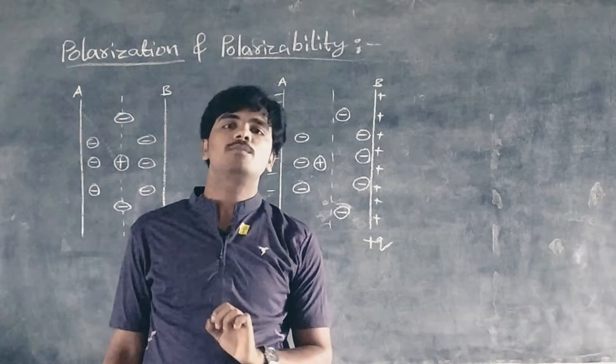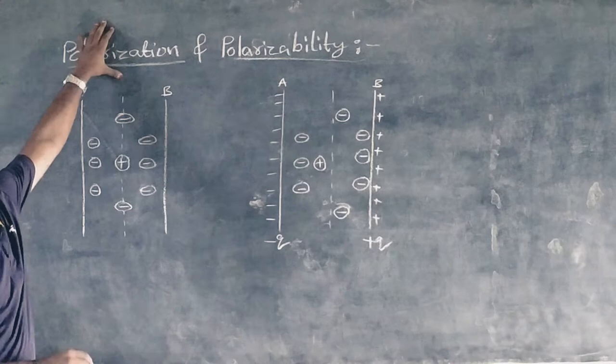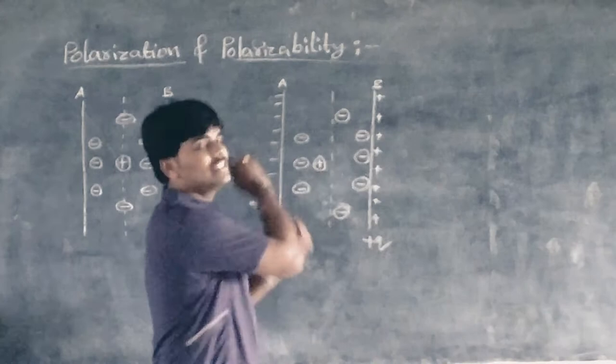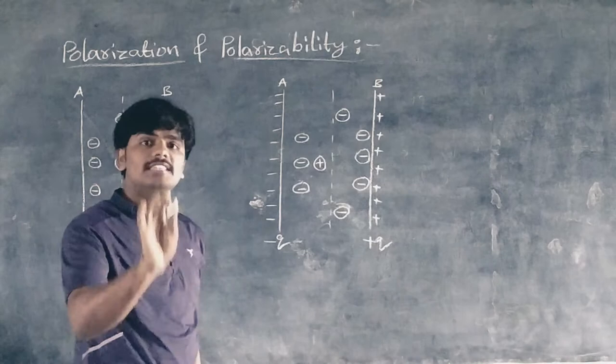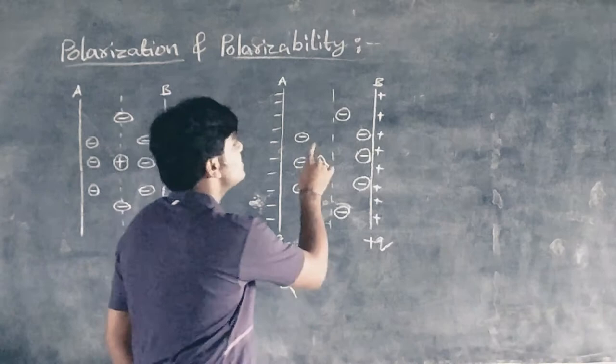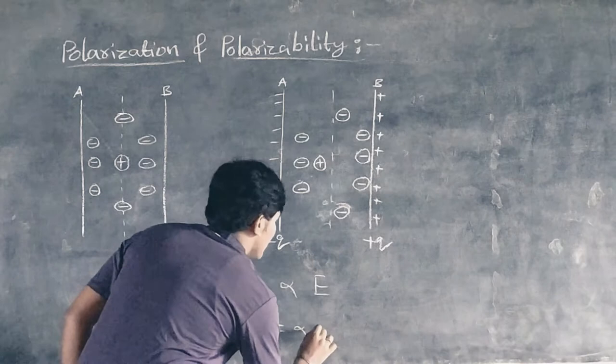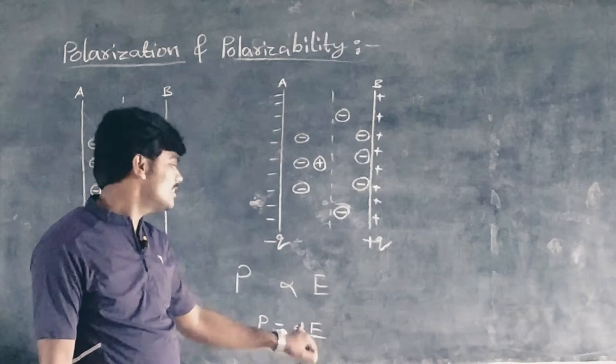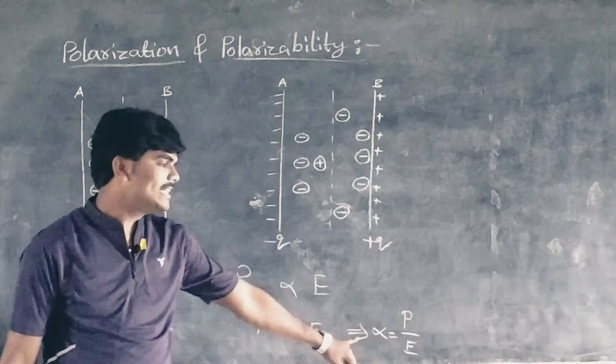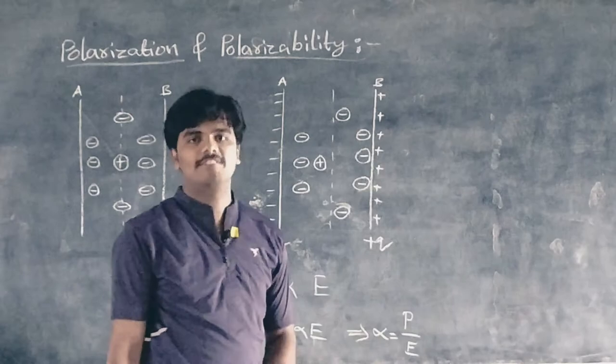Regarding polarizability: when the electric field E increases, the induced dipole moment p also increases. So the induced dipole moment p is proportional to the intensity of the electric field E. This can be written as p = αE, where α is the constant of proportionality called polarizability. Thus, polarizability is defined as the induced electric dipole moment per unit electric field.